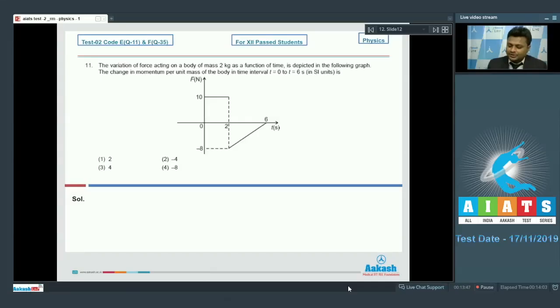Here is question number 11. The variation of force acting on a body of mass 2 kg as a function of time is depicted in the following graph. The change in momentum per unit mass of the body in interval t equals 0 to t equals 6 seconds in SI system will be what?